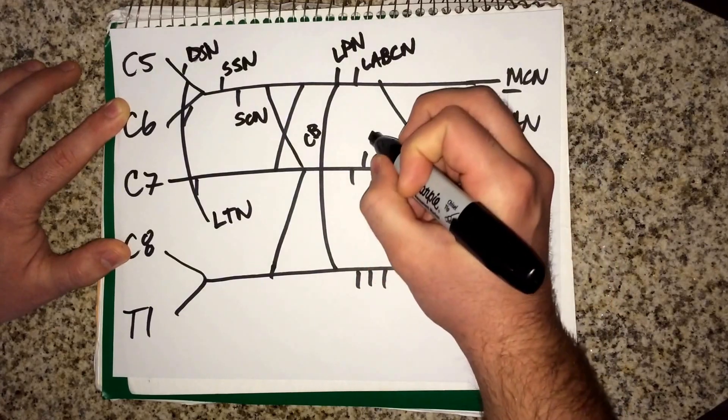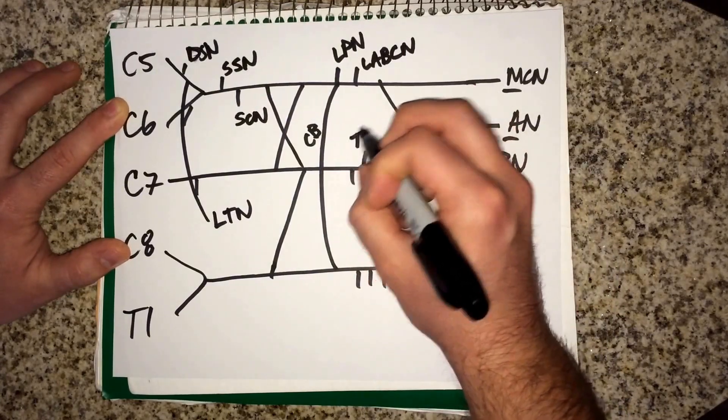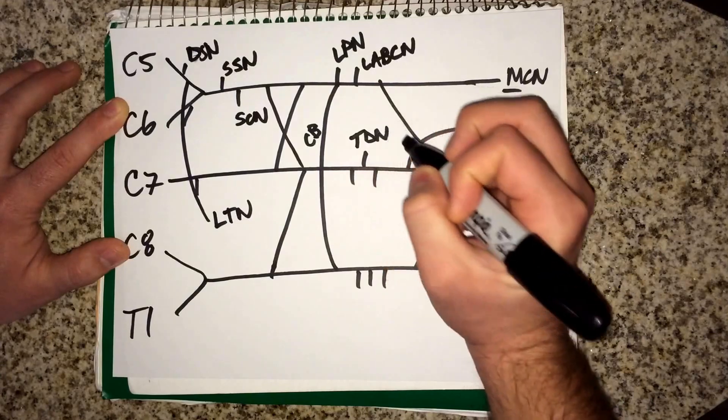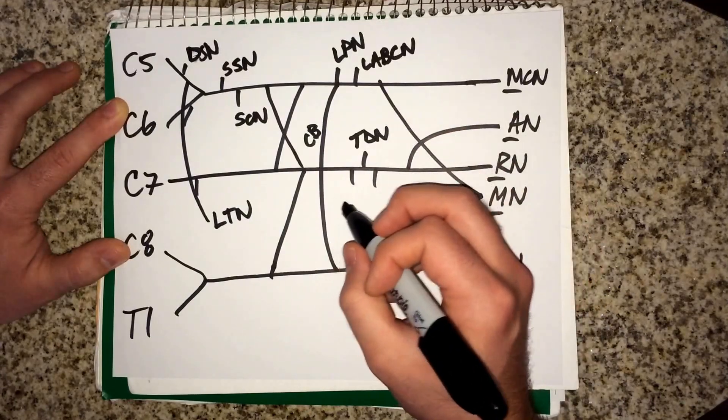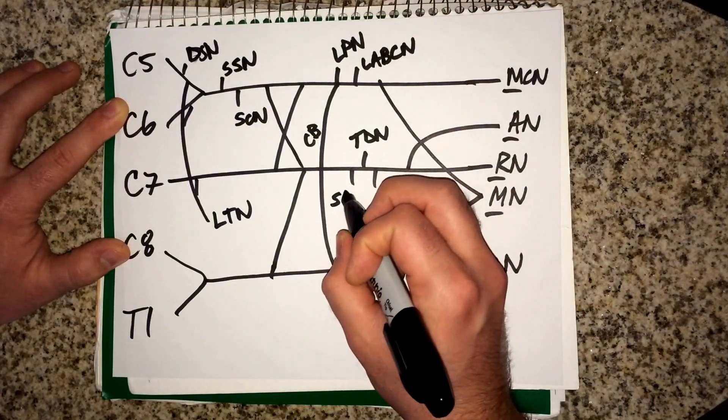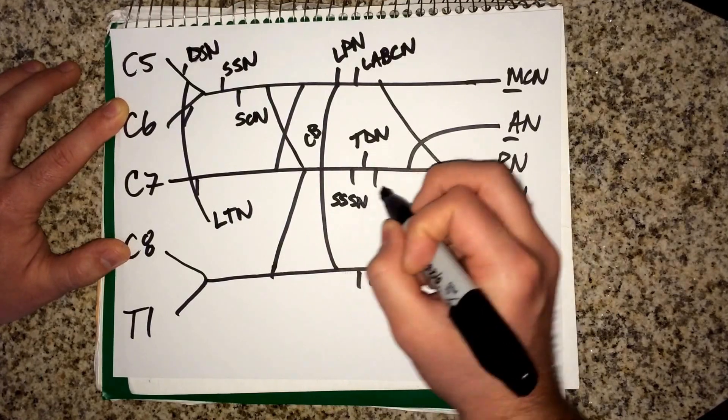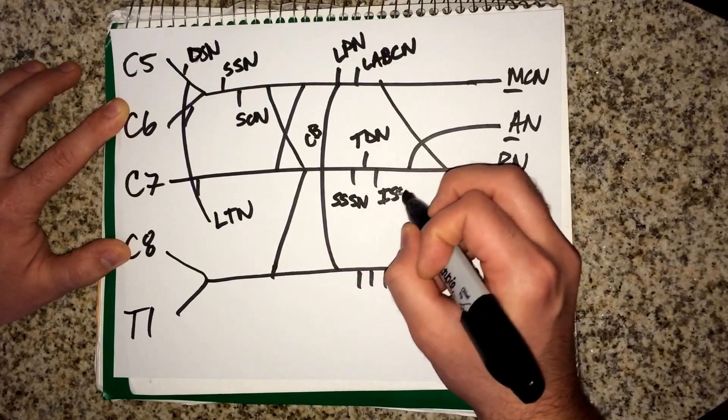The one next to it is your lateral antebrachial cutaneous nerve. The one that comes up in the middle right here, that's your thoracodorsal nerve. The one on the left that comes down is your superior subscapular nerve. The one next to it is your inferior subscapular nerve.